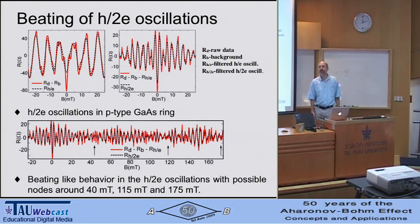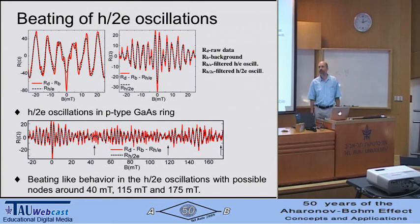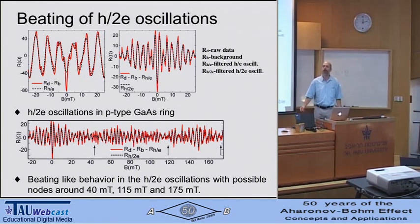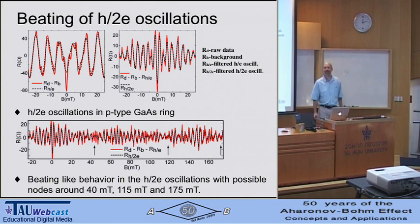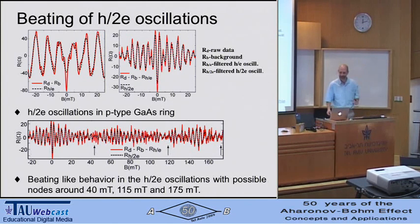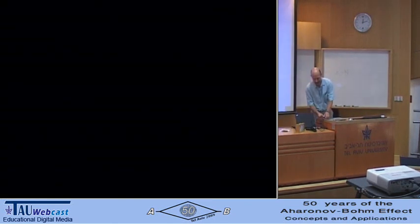Q: Coming back to the earlier question, from the resistance can you estimate the number of transverse modes in each arm of the ring? A: It's about three—more than one and less than ten. Let's thank the speaker again.